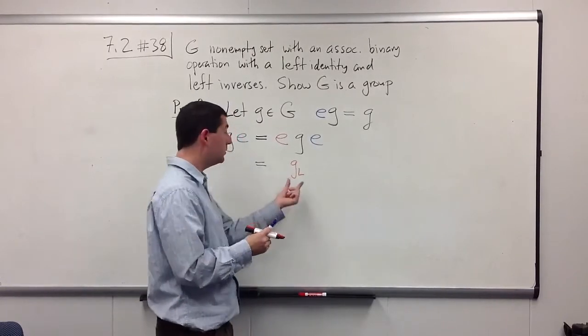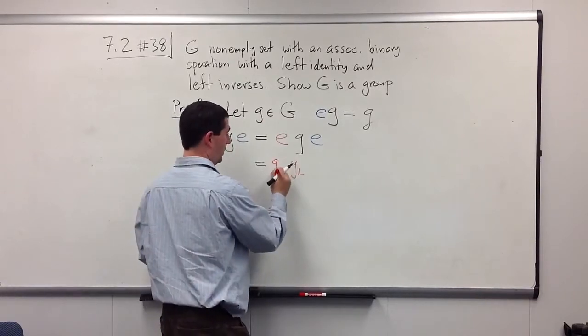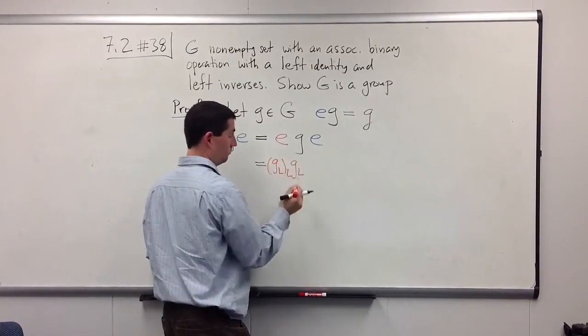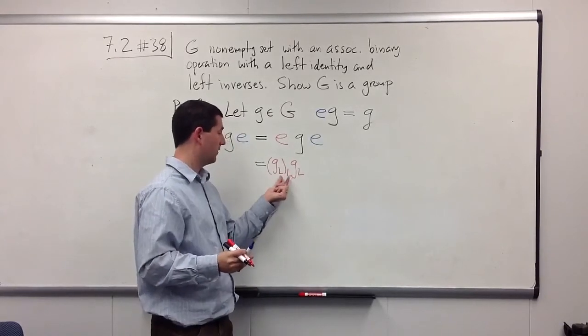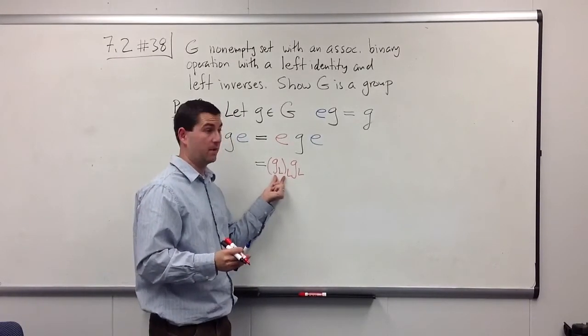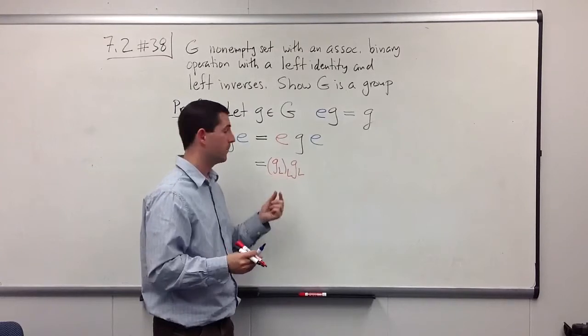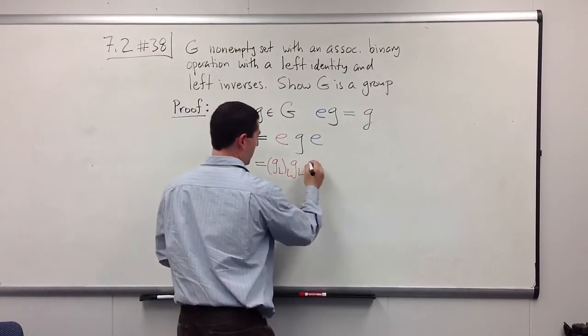Well, every element has a left inverse, including g_l. And I'm going to call its left inverse g_ll. Why not? So this is the left inverse for the element g_l, which happens to be the left inverse for g. And I can copy my g.